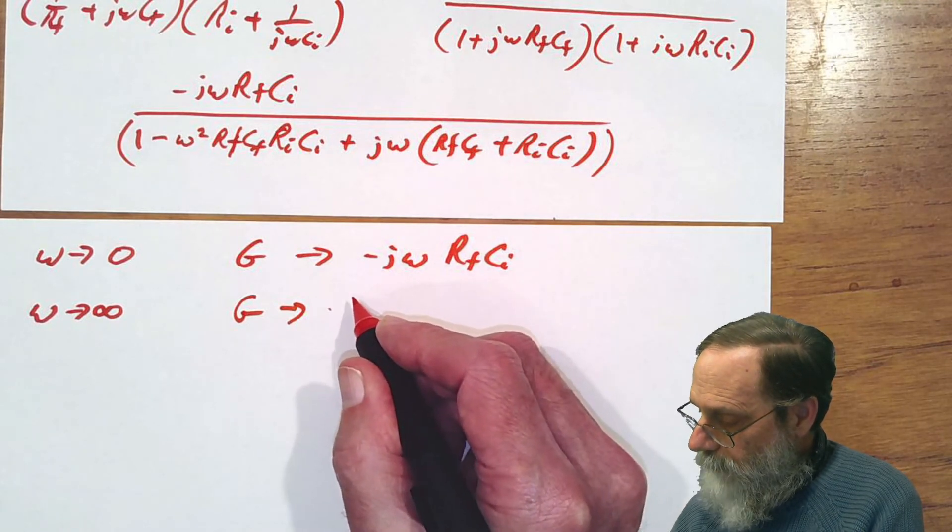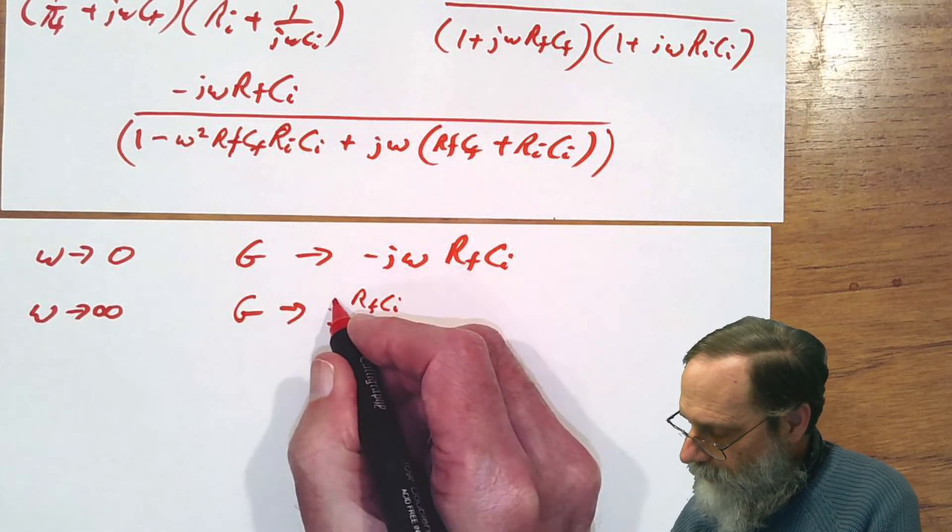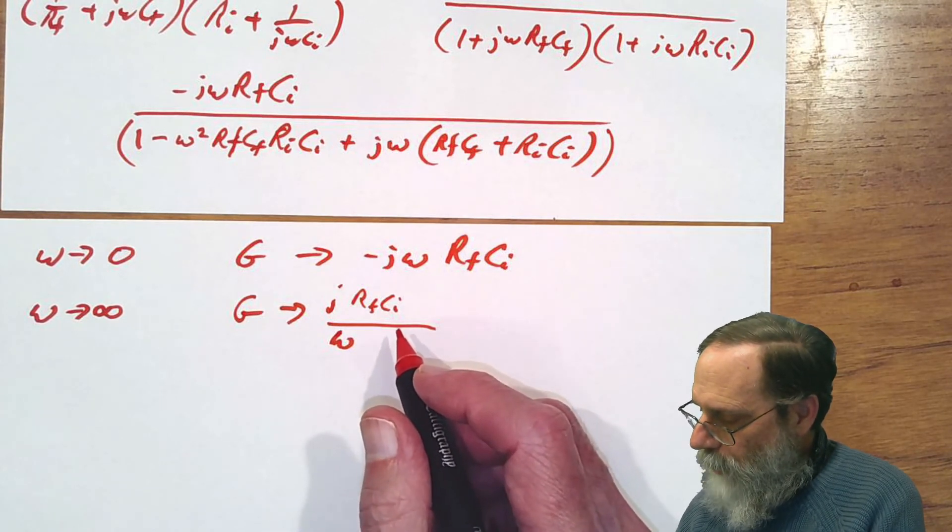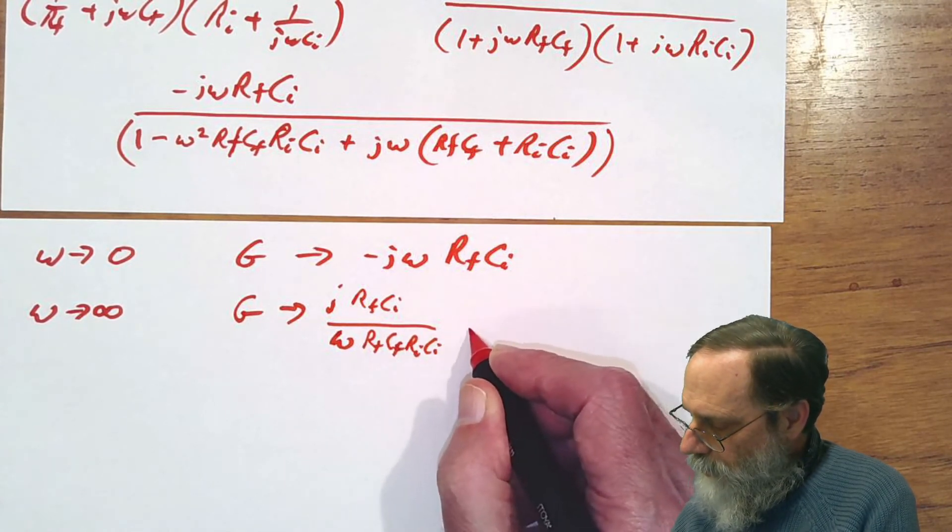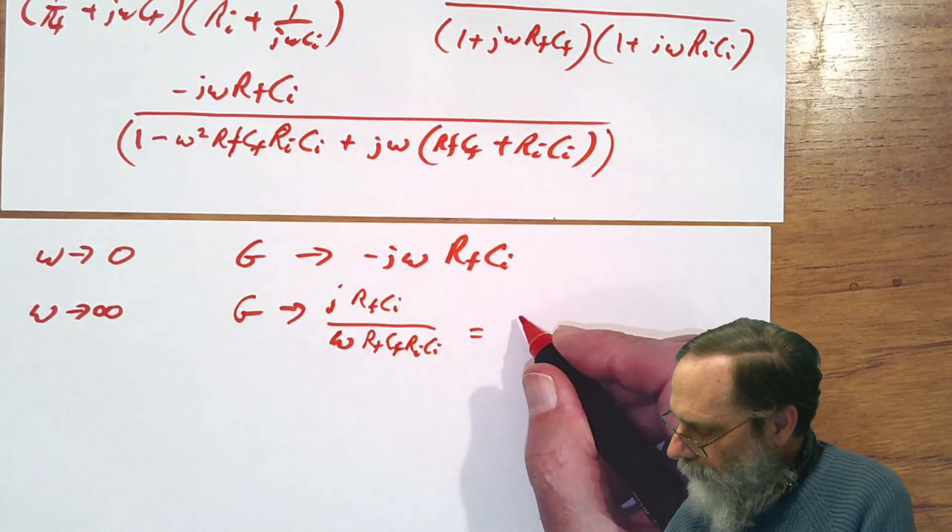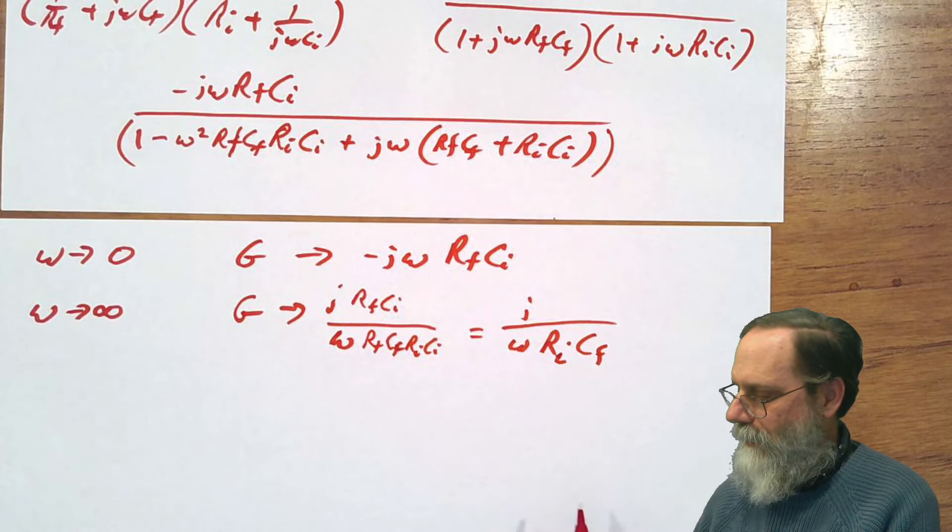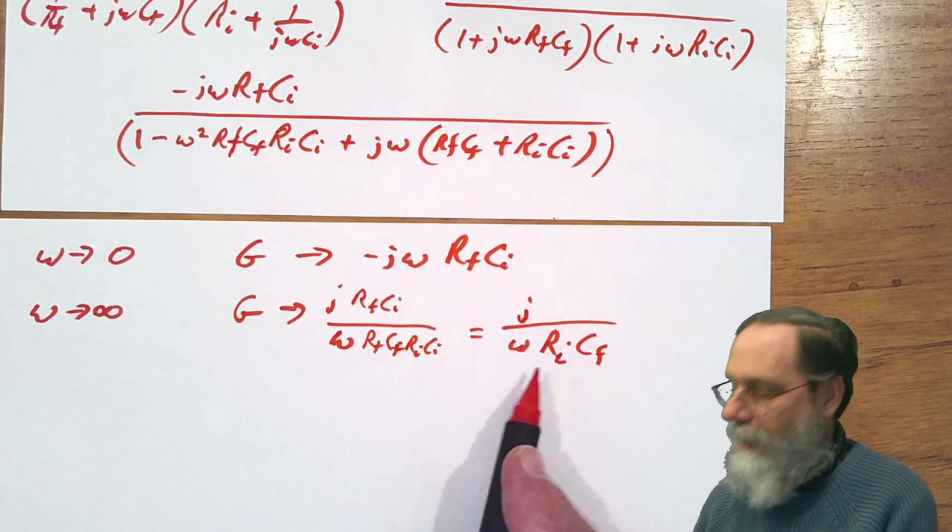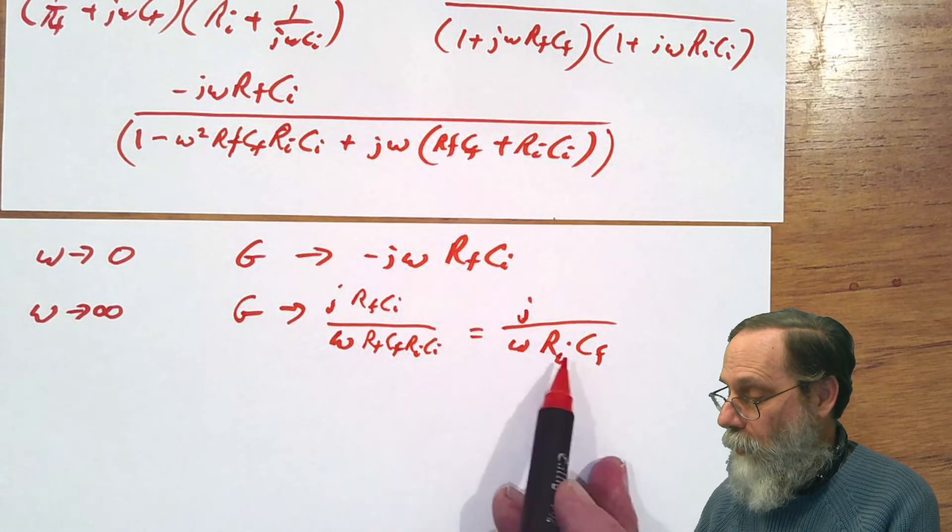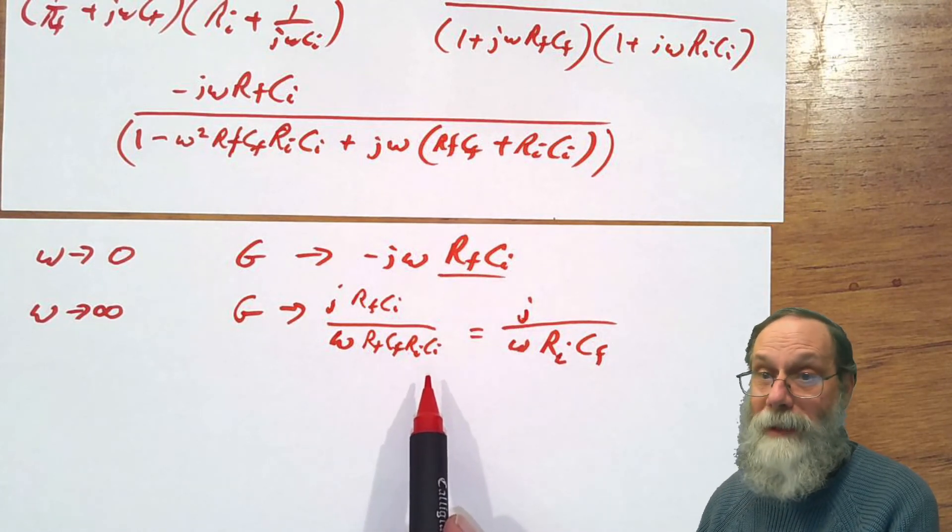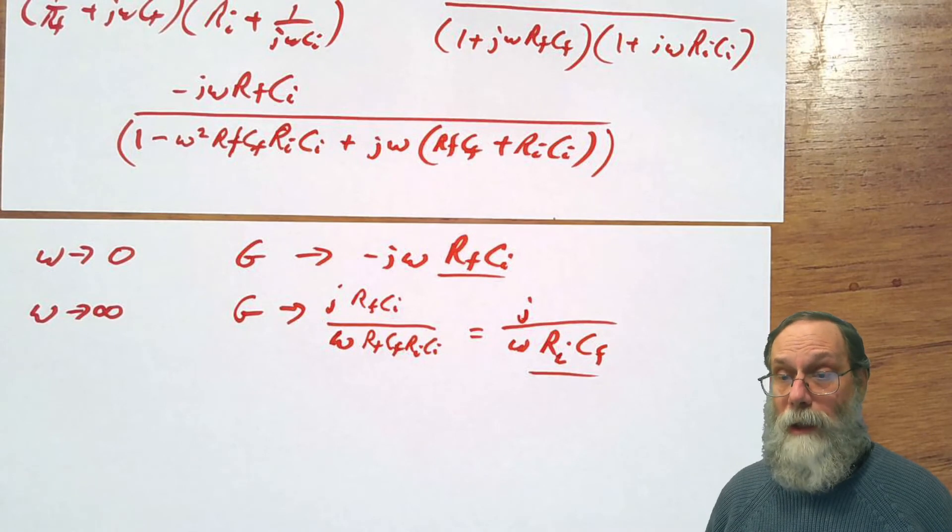We will have Rf Ci over omega times Rf Cf Ri Ci, which is j over omega Ri Cf. So this has the form we expect to see. It's a line sloping down, it's proportional one-over frequency. This one depends, going up, on Rf Ci, coming down depends on Ri Cf. So we've got those two asymptotic lines.